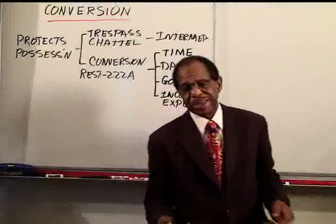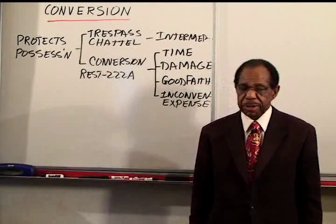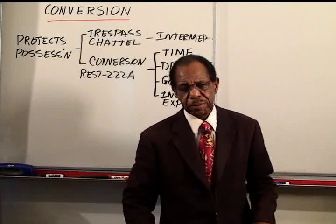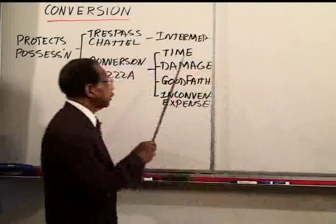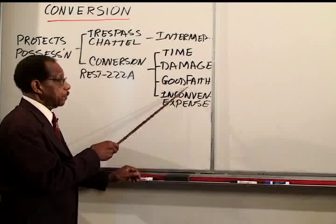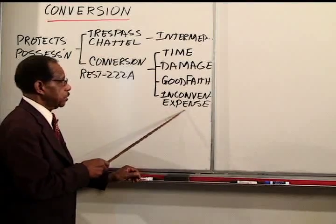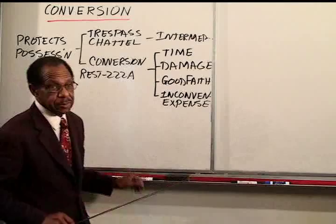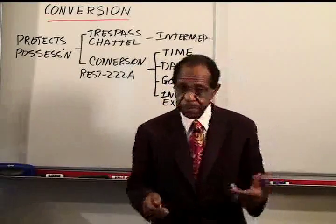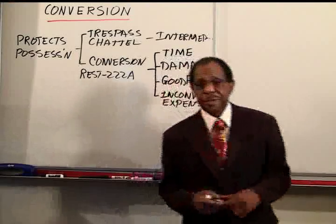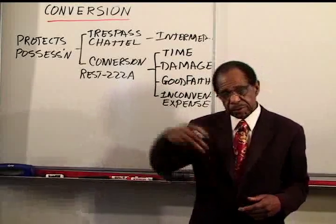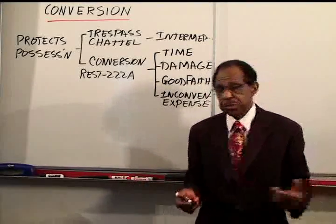So those are the 26 examples from the Restatement itself. I've seen them used numerous times for exam purposes, and you now understand how these factors — time, whether the property was damaged, good faith, inconvenience and expense — are used to determine whether or not there really was a tort. If there was a conversion, the next question is: as the property is redistributed into the population, which of those people are liable for conversion and which are not?